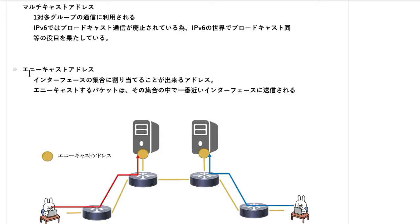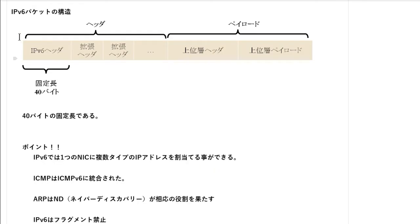次はマルチキャストアドレスです。これは一対多グループの通信に利用されます。IPv6の世界ではブロードキャスト通信が廃止されたので、IPv6でブロードキャスト同等の役目を果たしているのがこのマルチキャストアドレスです。次はエニーキャストアドレス。これはIPv6特有のアドレスで、インターフェースの集合に割り当てることができます。エニーキャストするパケットはその集合の中で一番近いインターフェースに送信されます。例えばサーバー2台に同じエニーキャストアドレスを設定すると、クライアントはそれぞれ近い方のサーバーに通信します。